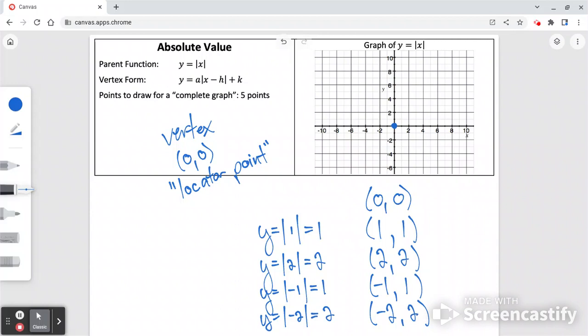So when we actually graph these, we get (0, 0), (1, 1), (2, 2). On the other side, negative 1, 1. Negative 2, 2. If we kept this going, you would see that it just continues in this straight-sided V shape.